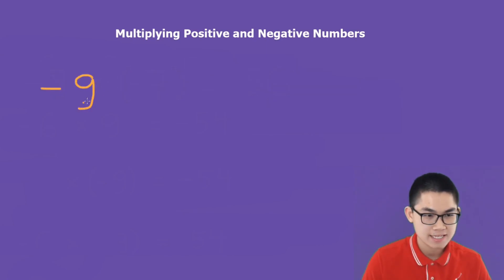How about negative 9 times 7? 9 times 7 is 63. Now, there's a negative sign here, because in the multiplication, there is one negative sign.